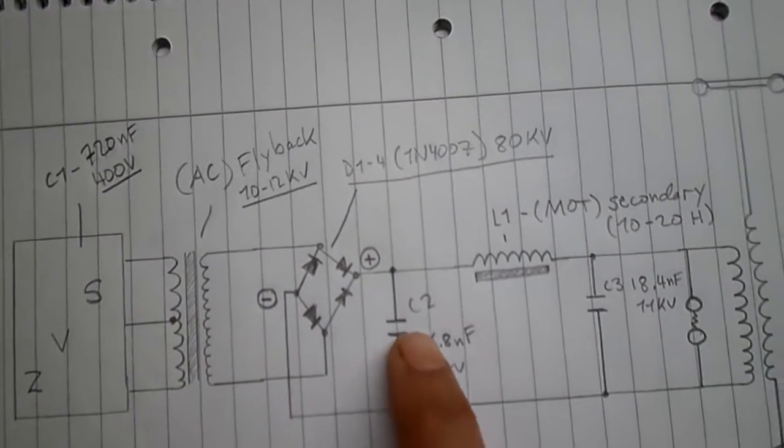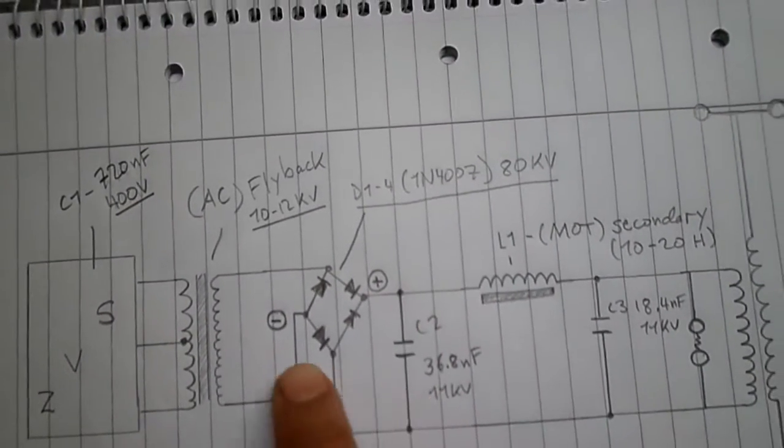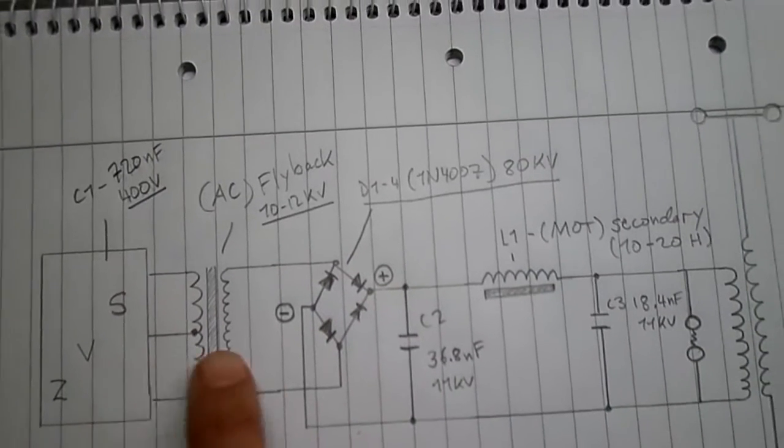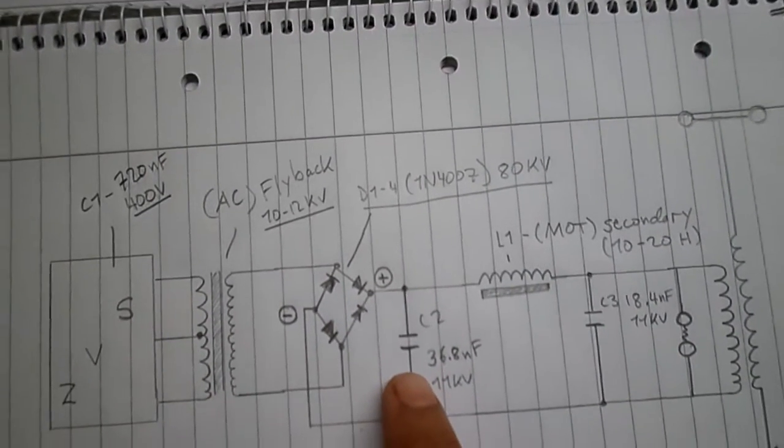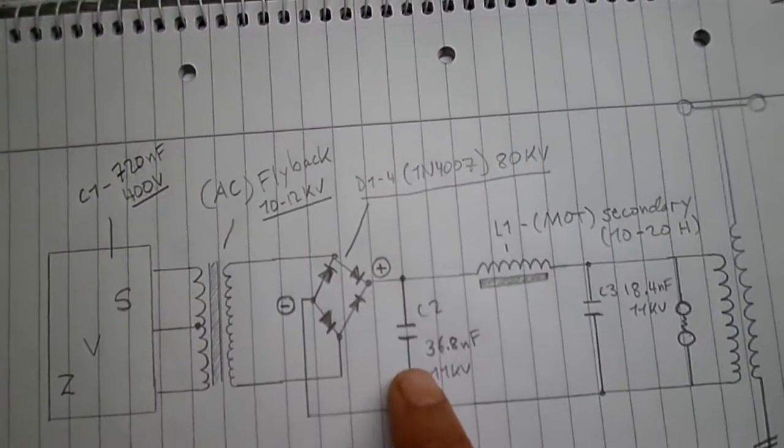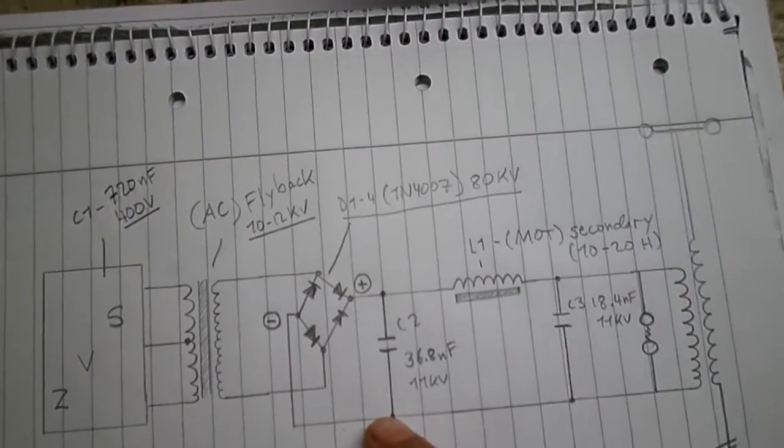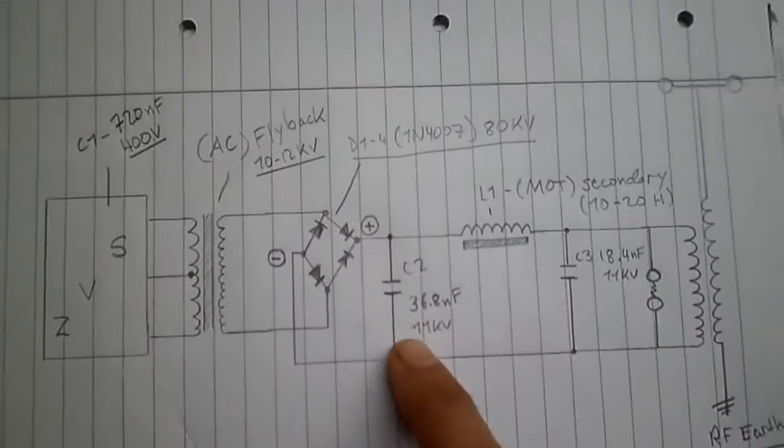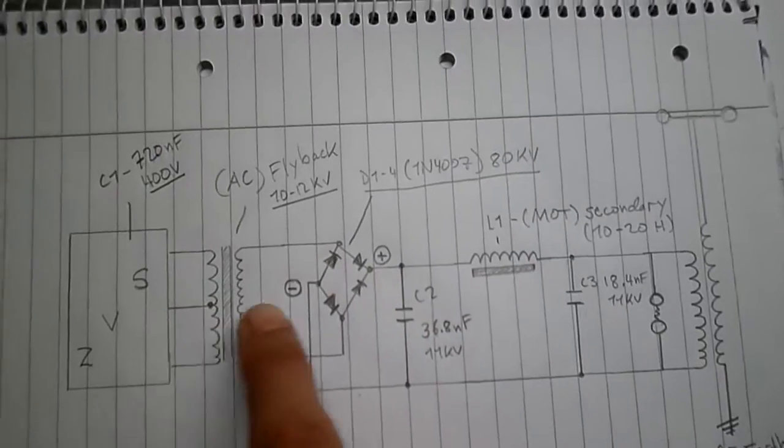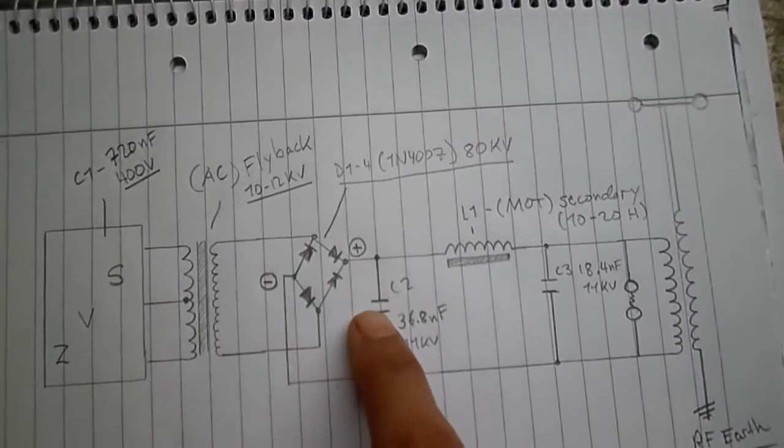Then we have this filter, which is basically to smooth this out even more. Don't necessarily need to have it, but I threw it in there anyway because I have it. So it's filtering that high voltage converted DC now to smooth it out.